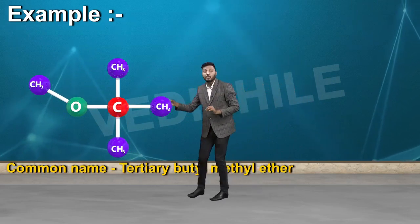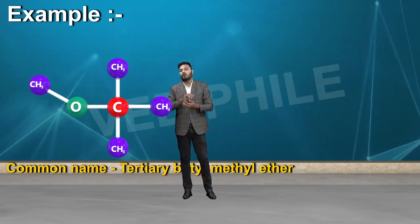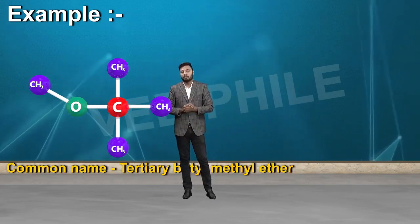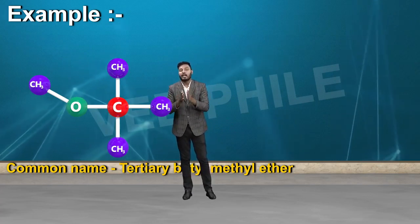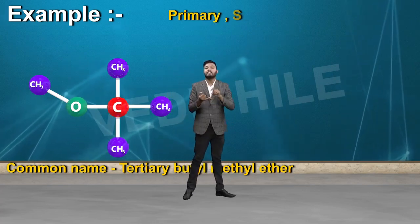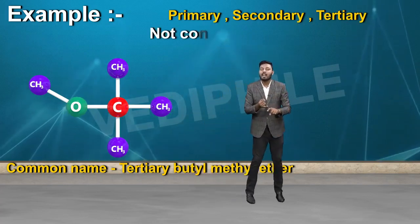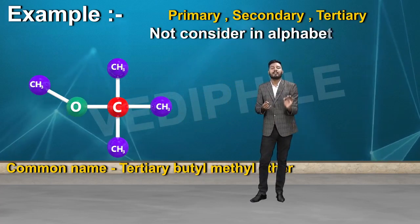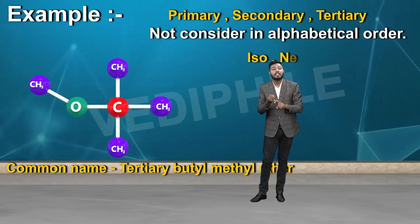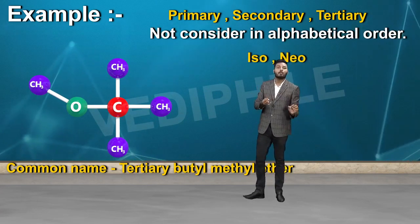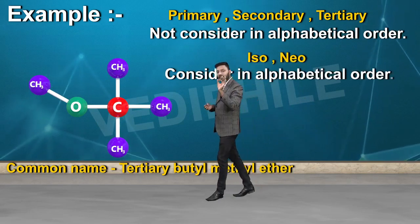आपको लग रहा होगा कि Tertiary तो T से आता है, M पहले आता है, तो methyl पहले होना चाहिए। लेकिन primary, secondary, tertiary को alphabetical order में consider नहीं किया जाता। जबकि iso और neo को alphabetical order में consider करते हैं।